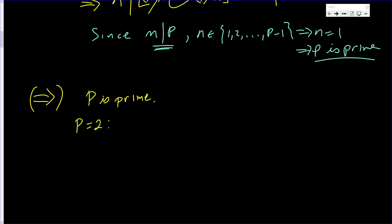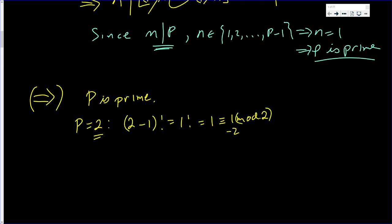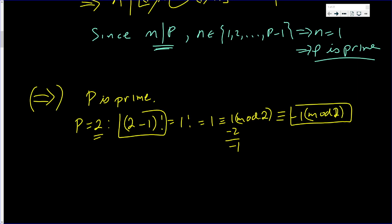If p equals 2, we want to show that p minus 1 factorial — which is 1 factorial, which is 1 — is congruent to negative 1 mod p. Since 1 mod 2 equals 1, and 1 minus 2 is negative 1, this is congruent to negative 1 mod 2. So we've shown it for p equals 2.